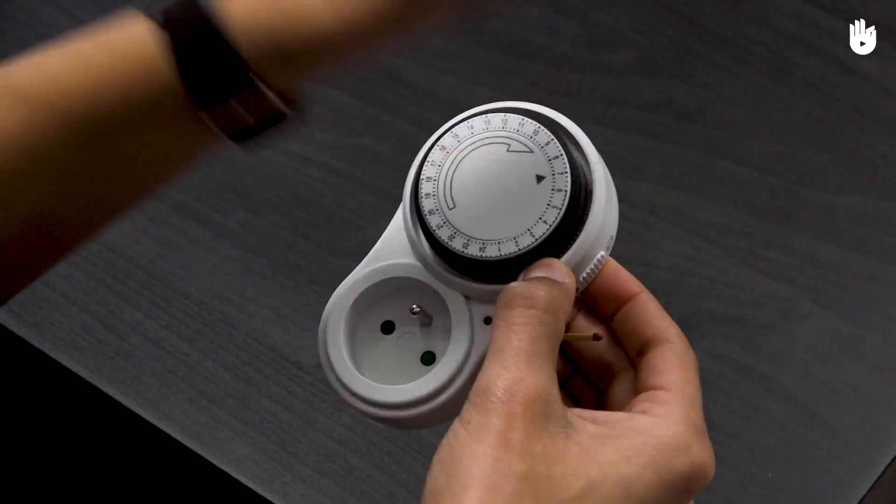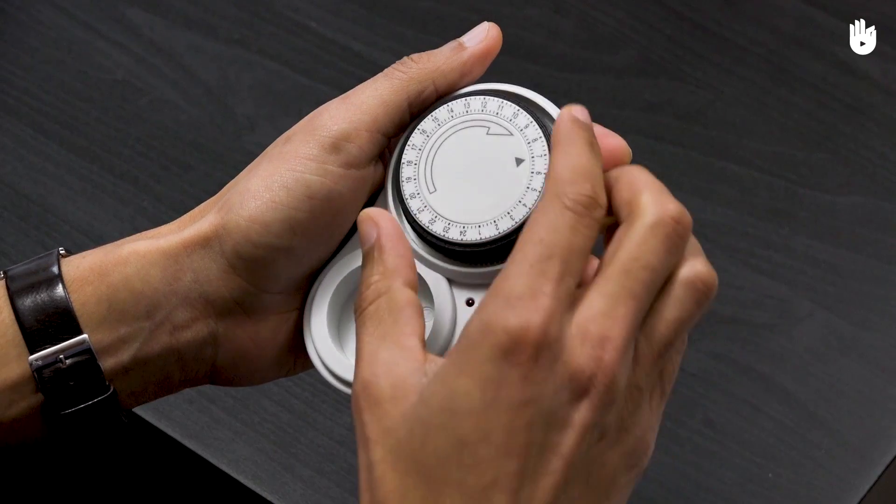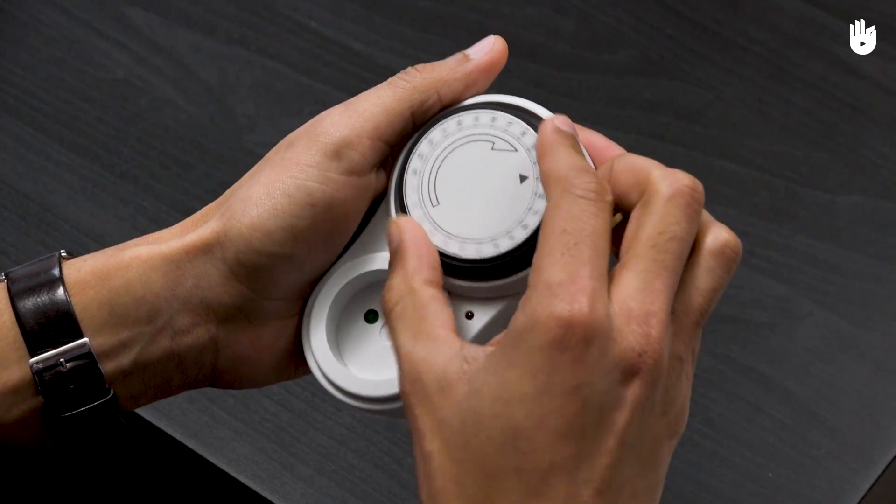First of all, set the timer by turning the central dial to the right until the marker is in line with the current time.